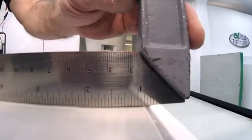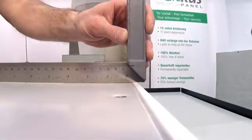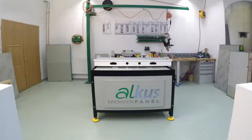Since the AUKUS panel neither swells nor shrinks, it's installed flush into the formwork. This guarantees a perfect joint pattern.